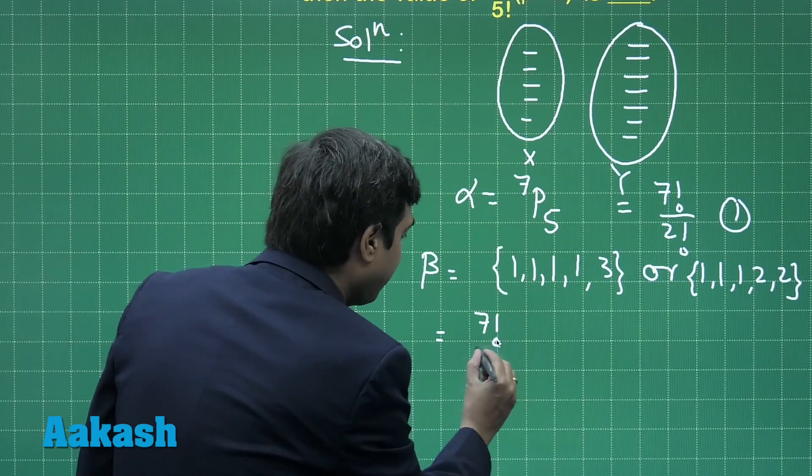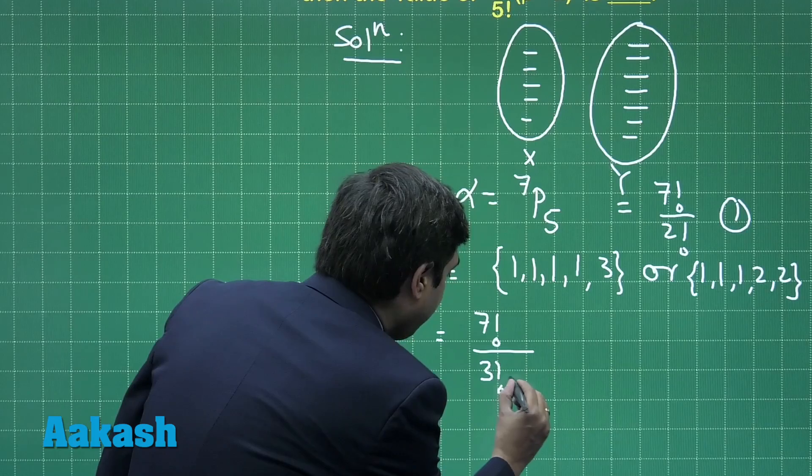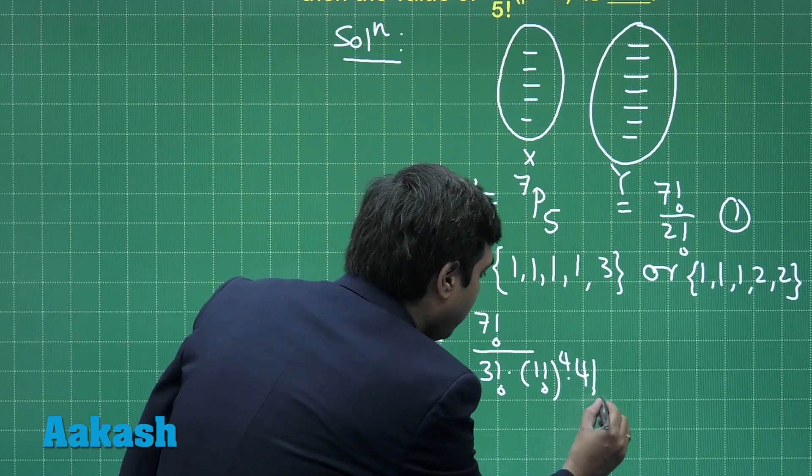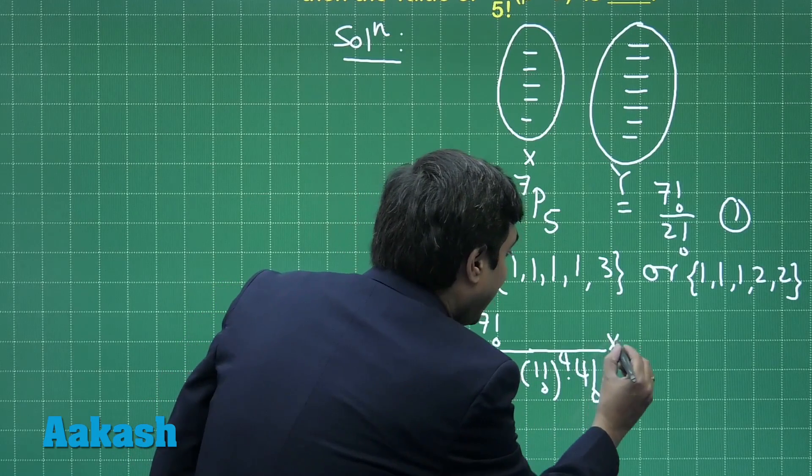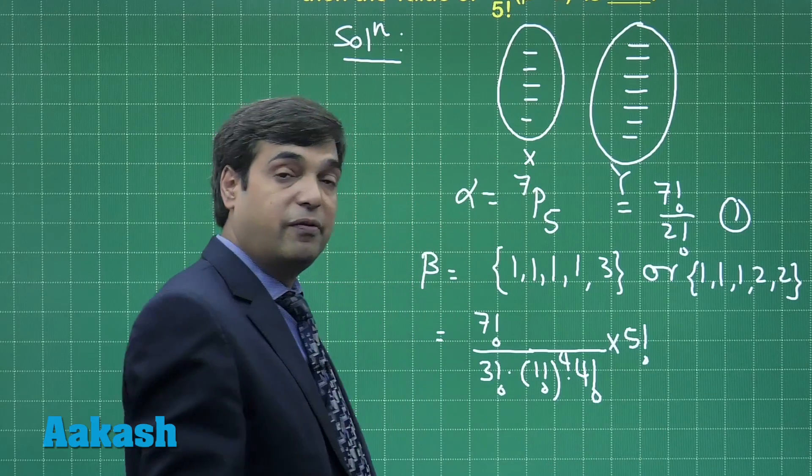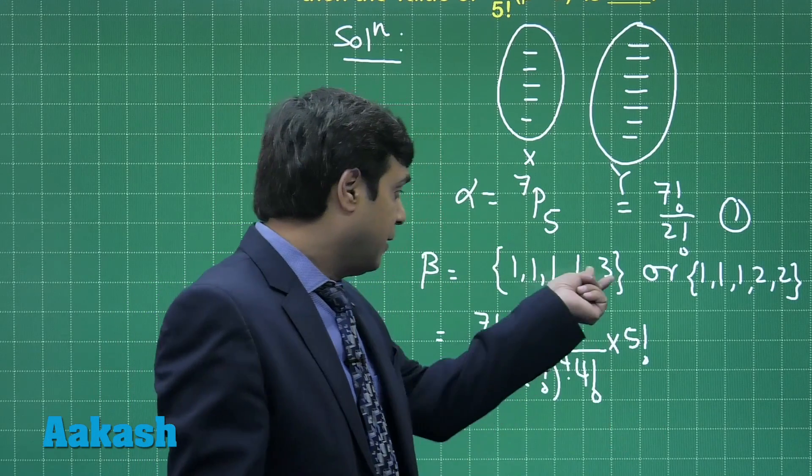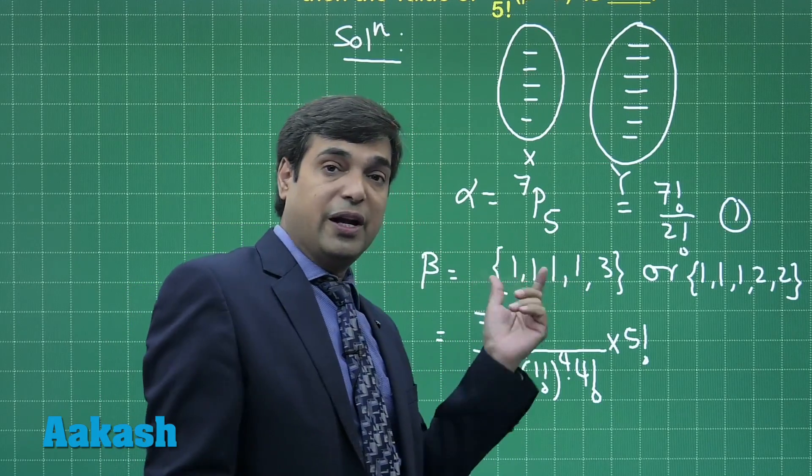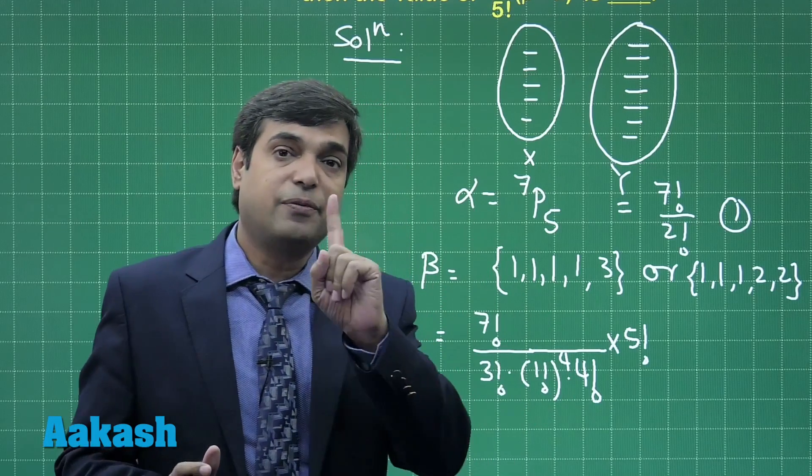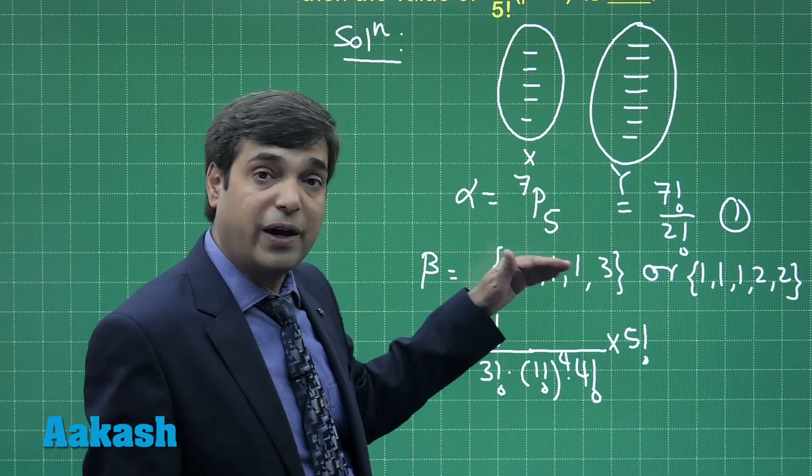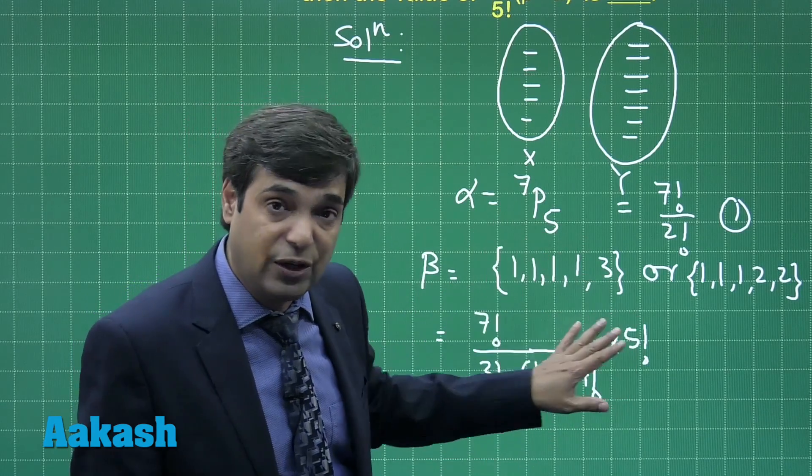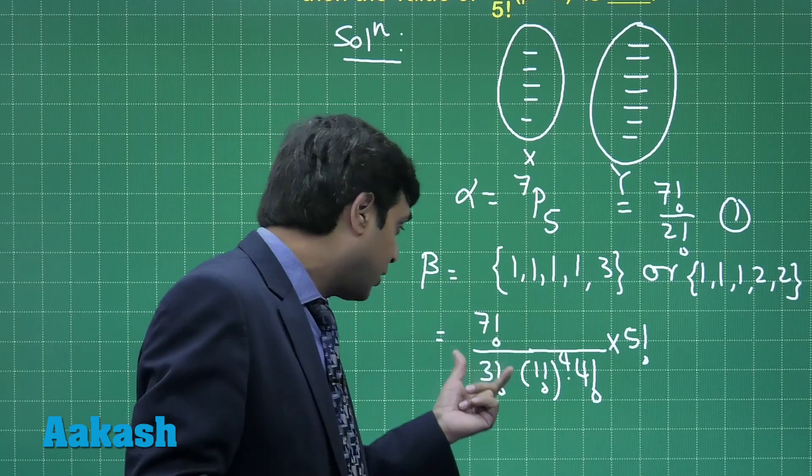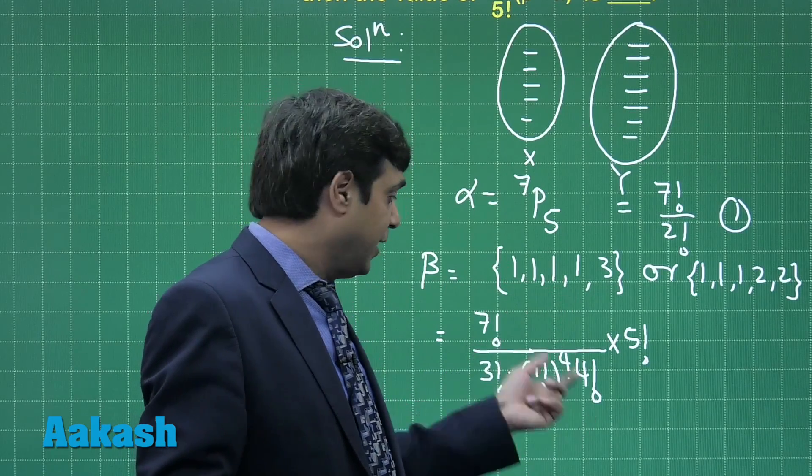We can find the permutation as 7 factorial divided by 3 factorial multiplied with 1 factorial raised to the power 4 into 4 factorial, then these can be permitted in 5 factorial ways. Or we can write as 7C3 multiplied with 4 factorial divided by 1 factorial to the power 4 into 4 factorial.